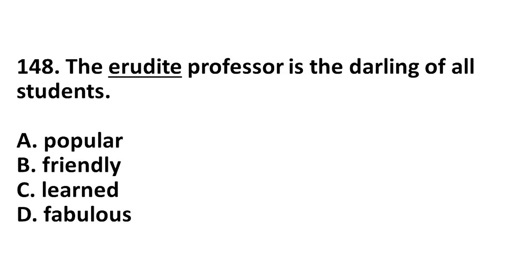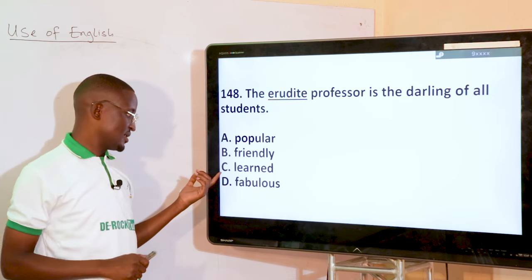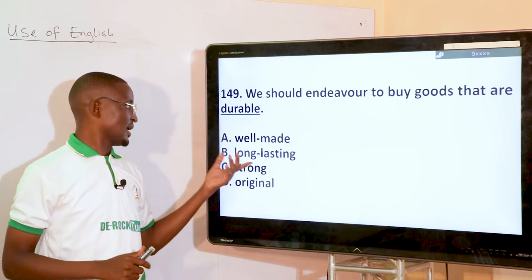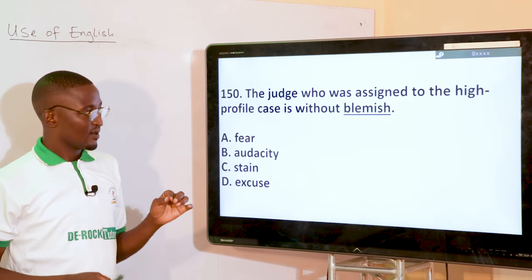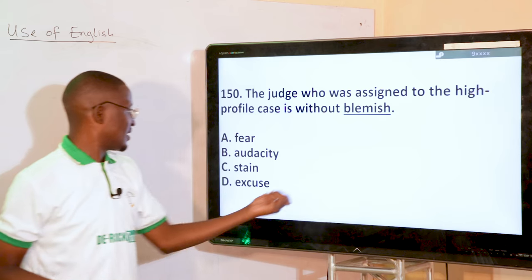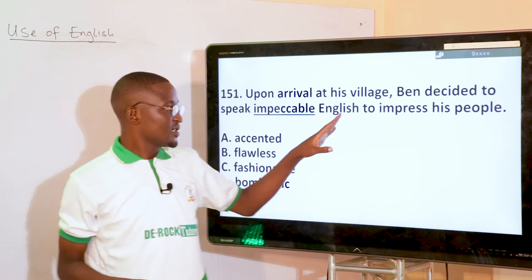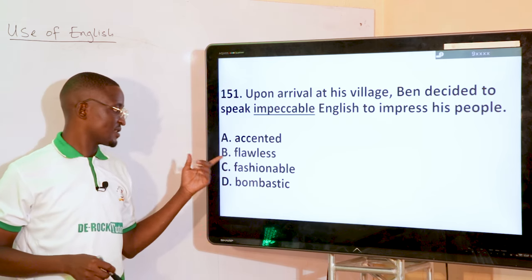The erudite professor is the darling of all students — 'erudite' means learned. We should endeavor to buy goods that are durable — durability is the ability to last long, so 'long-lasting.' The judge assigned to the high-profile case is without blemish — blemish means stain. Ben decided to speak impeccable English — impeccable means flawless, option B.